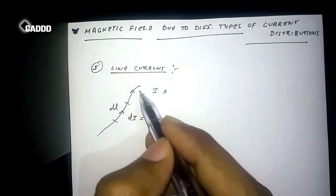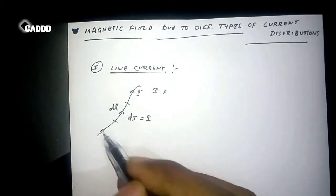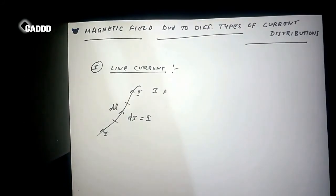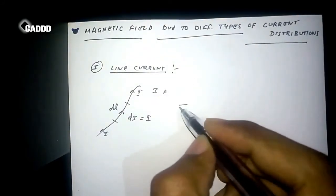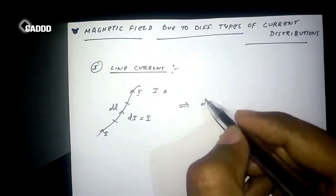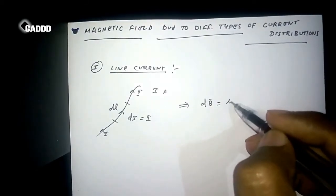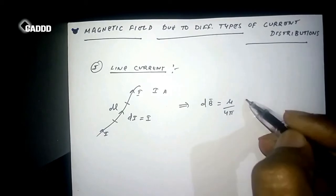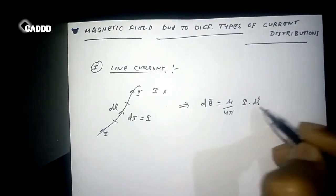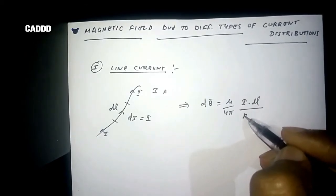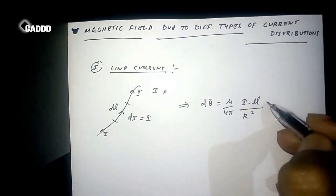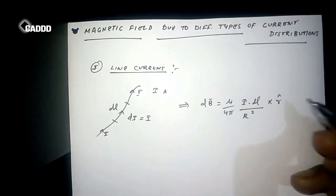So according to Biot-Savart law, we know that dB is equal to mu by 4 pi, and then I dot dL by r square cross r cap.